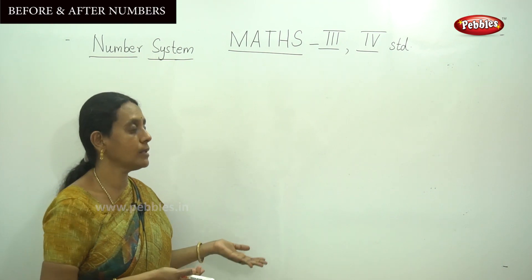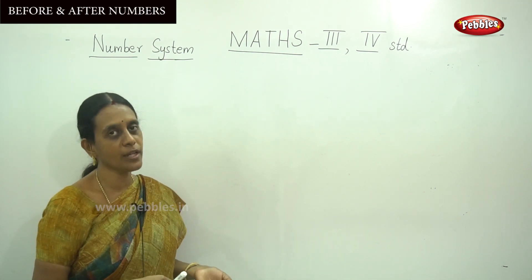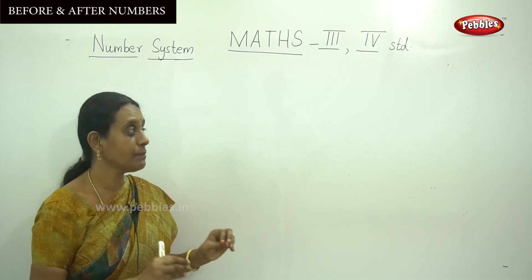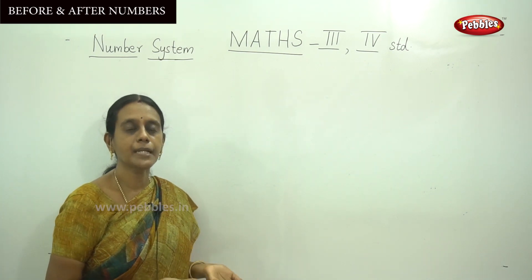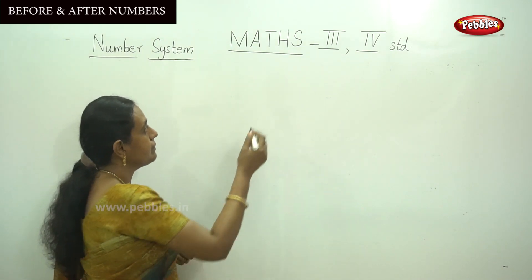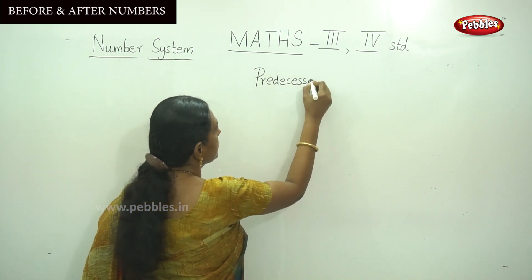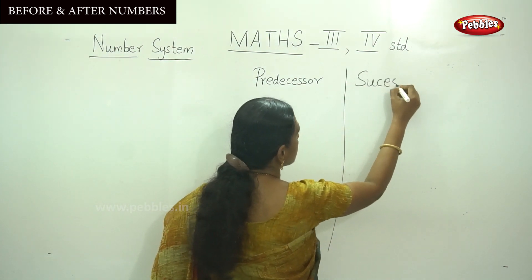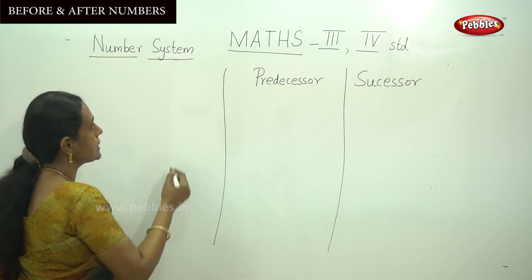In your 1st standard you learned before number and after number. In 3rd and 4th standard we call it predecessor and successor. Predecessor means before and successor means after. Let me do a few example sums.